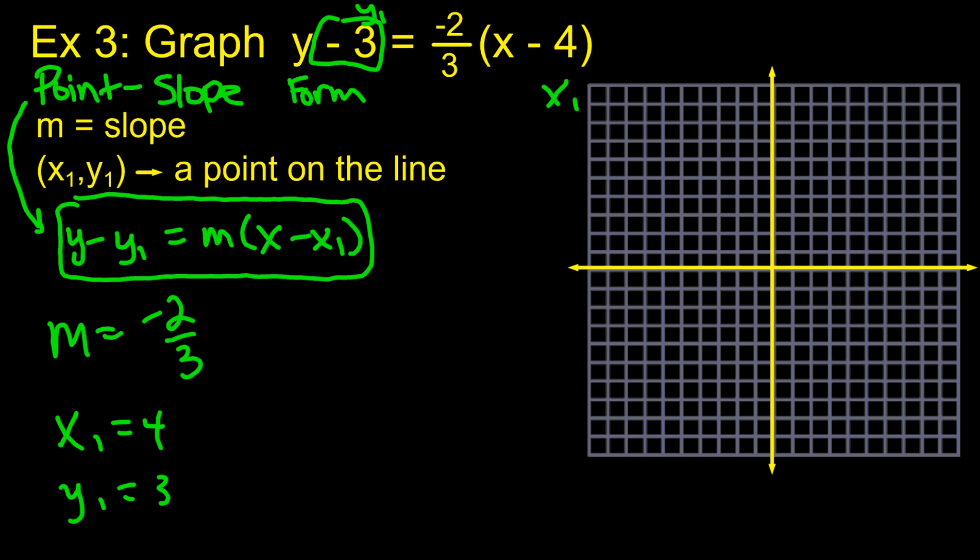So what that tells me is I've got a point in terms of x's and y's. It's 4, 3. So I'm going to go over 4, up 3, and make a point. There's my point.